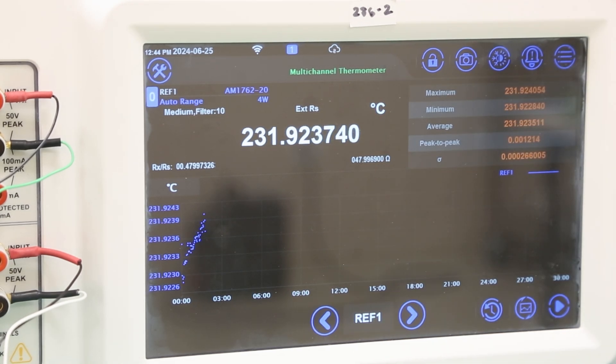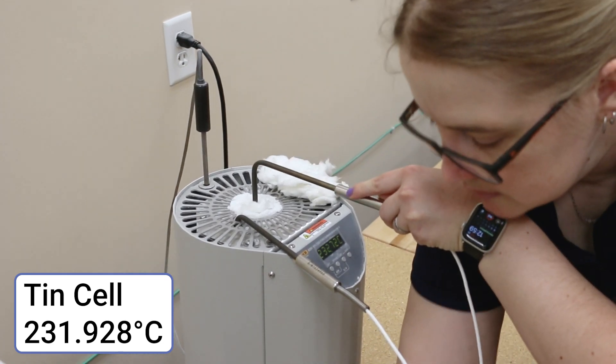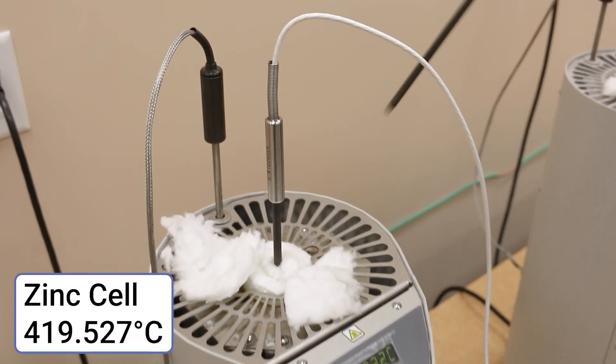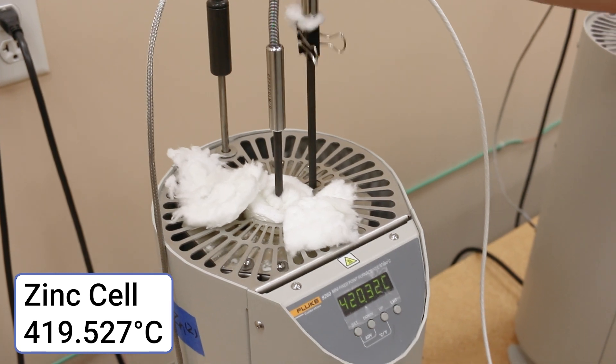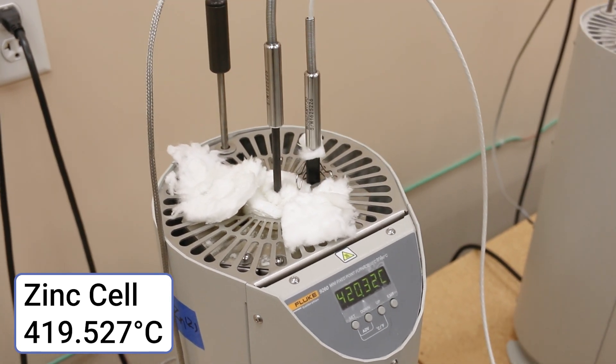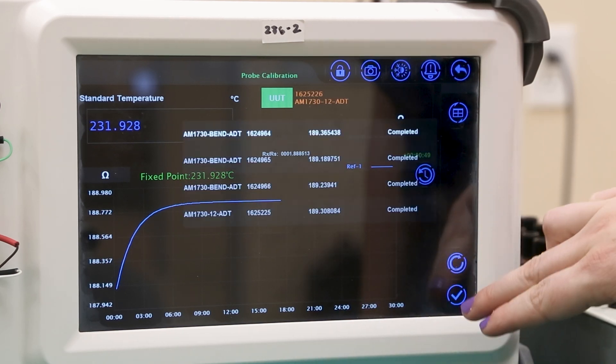Once readings have plateaued, we can move probe 1 from standby into the active insert, then return to measuring probe number 3 in the zinc cell. It's important for a calibration lab to determine the optimal order of measurements, stability checks, and standby probes in order to reduce downtime as much as possible.